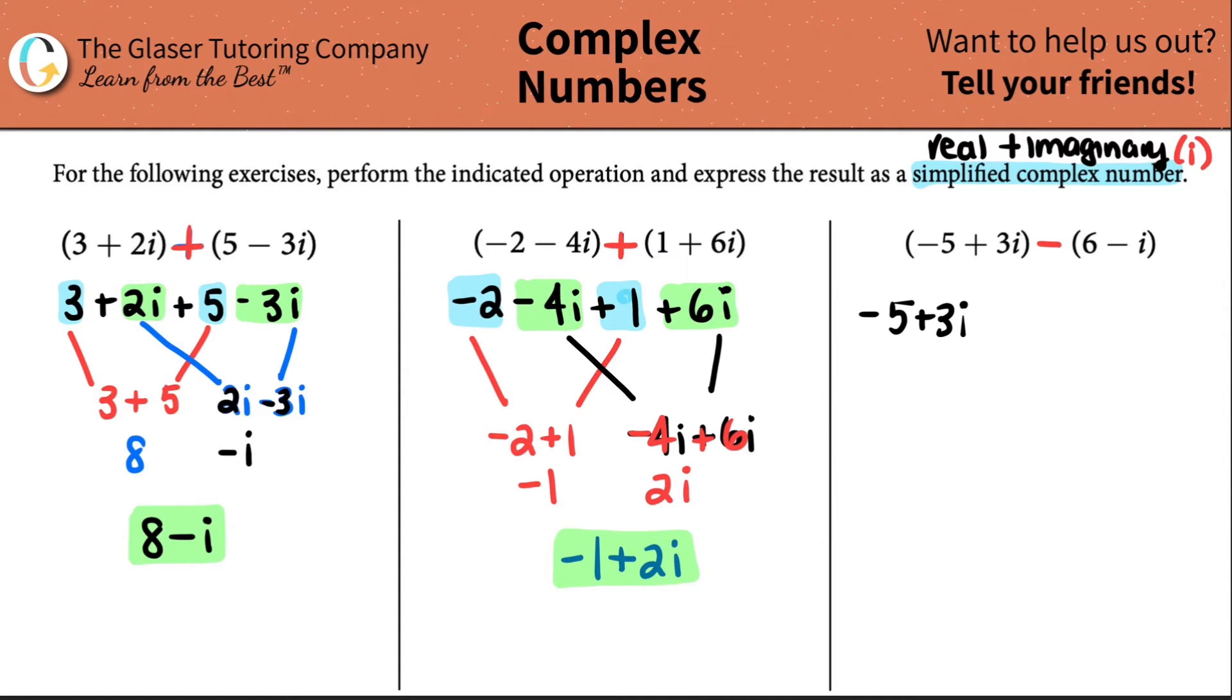However, what secret number is here? You guessed it, it's a secret 1. We have to distribute before we get rid of the parentheses. And just like I say time and time again, we have to be fair. You have to multiply this negative 1 by the 6, and then you have to multiply that negative 1 by the negative i.